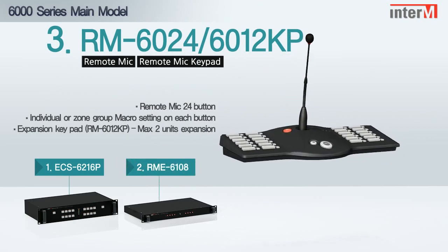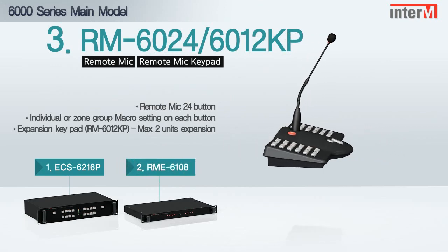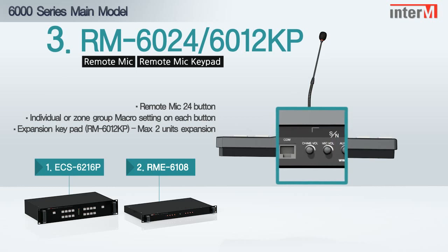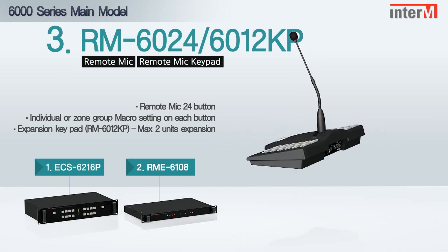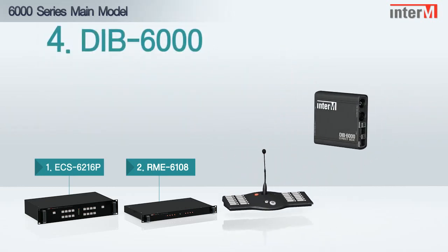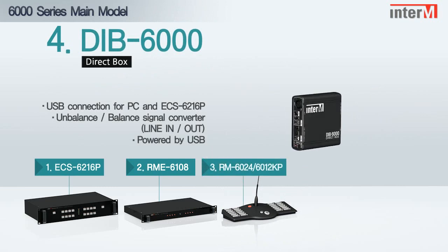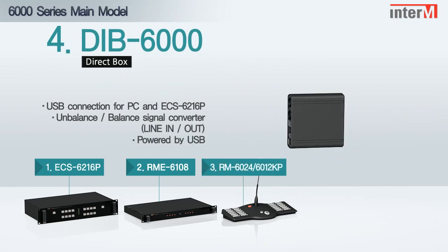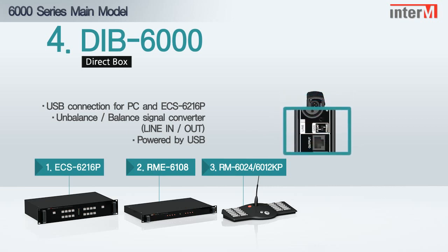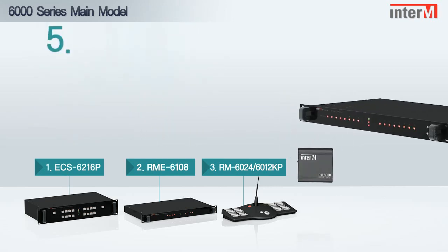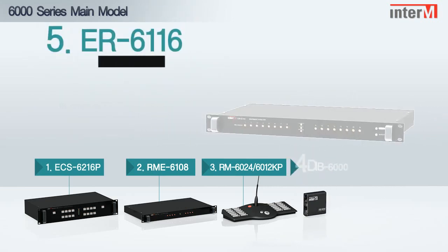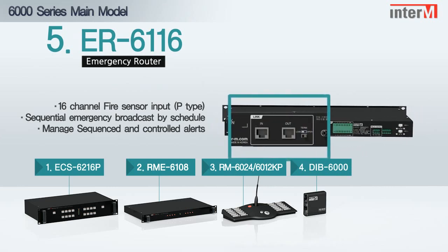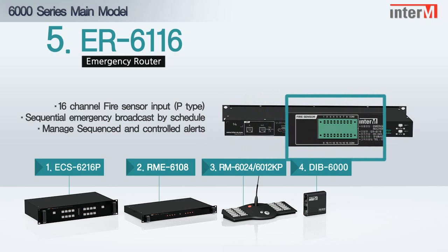RM 6024 / 6012 KP: remote mic and keypad. DIB 6000: interface unit between PC and ECS 6216P. ER 6116P: sequential emergency broadcast unit.